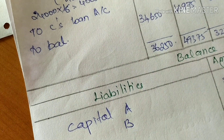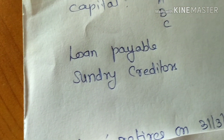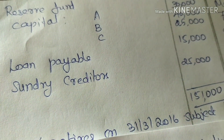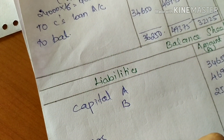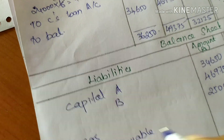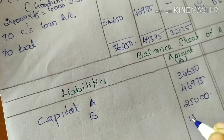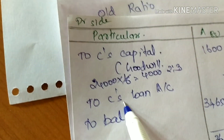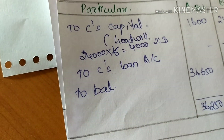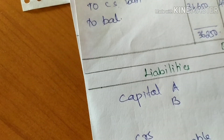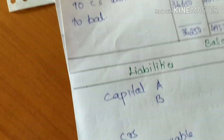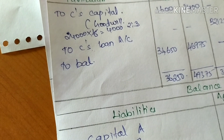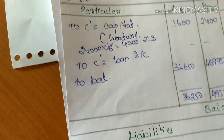Creditors are 25,000. Loan payable is 15,000. C's loan account is 30,125. Total liabilities are approximately 1,25,000.